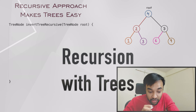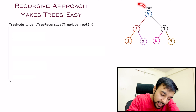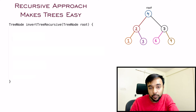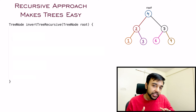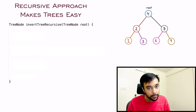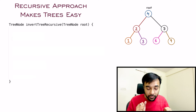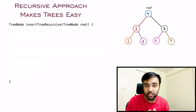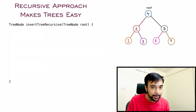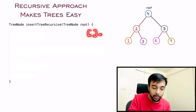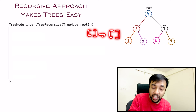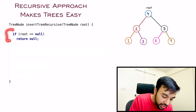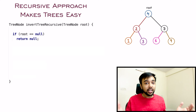Let us try to form a solution using recursion. On the right you have a sample tree passed as an input parameter to the function invert_tree_recursive. We will go step by step and populate this function. In a recursive function, the first thing you do is have a base condition. For this problem, if you have a null tree, its inversion will also be a null tree. So I add the condition: if root equals null, simply return null.